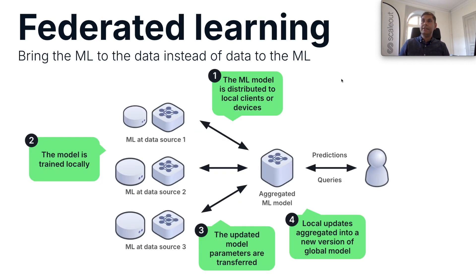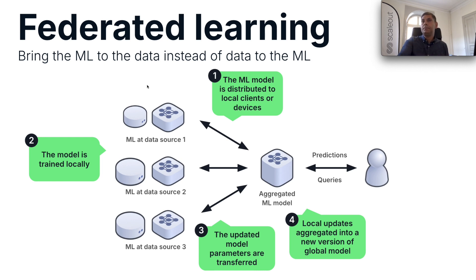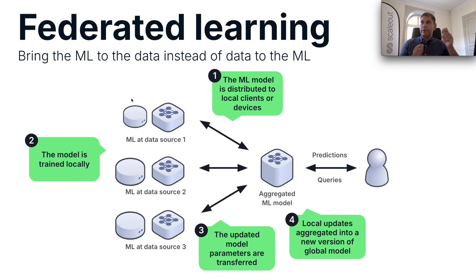One of the options is federated machine learning. It depends on two components: the server side, where aggregation happens, and the client side, where the data resides. Throughout the training process, the idea is that clients will have complete autonomy over their data — the data never leaves the client's premises. The training process starts with the server sending a signal to each client to use a provided model together with their local data set and start training, running only a couple of epochs, then sending the partially trained model back to the server.